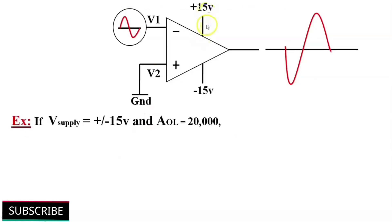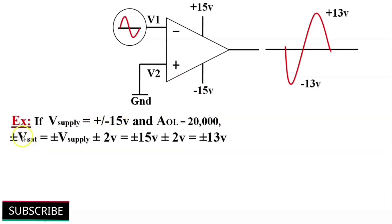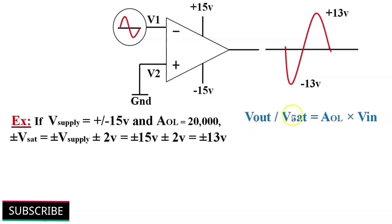Suppose an op-amp has a power supply of plus or minus 15 volts and open loop gain is 20,000. The supply voltage determines the limits or saturation voltage of the op-amp. Here saturation voltage plus or minus Vsat is equal to plus or minus 15 volts minus plus or minus 2 volts, that gives plus or minus 13 volts as the saturation or limit of this op-amp. As we know, Vout or Vsat is equal to open loop voltage gain Aol multiplied by input voltage Vin. Here we know saturation voltage and gain.